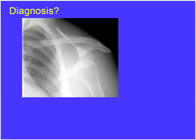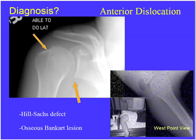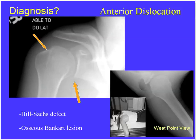Anterior dislocation — the shoulder moves inferior and medially. More likely on the exam are lesions secondary to dislocation. A classic example: an AP view showing flattening of the posterolateral humeral head — know this is a Hill-Sachs defect, occurring secondary to impaction against the anterior inferior glenoid. There may also be a small bony avulsion representing an osseous glenoid fracture or osseous Bankart lesion. The West Point view — patient supine, arm draped over the table in a modified axillary view — is best for demonstrating osseous Bankart lesions.